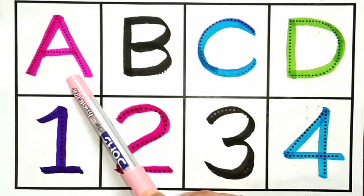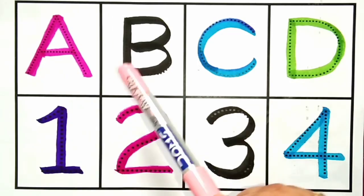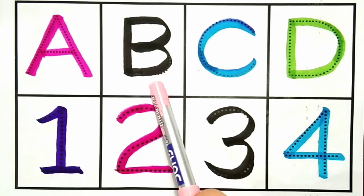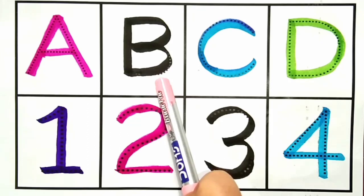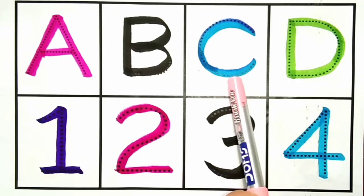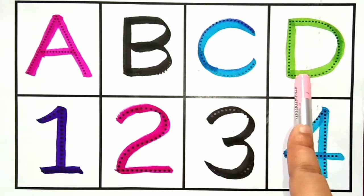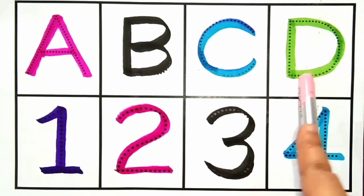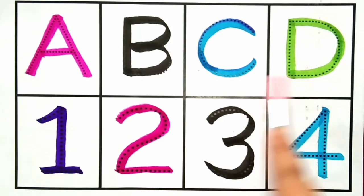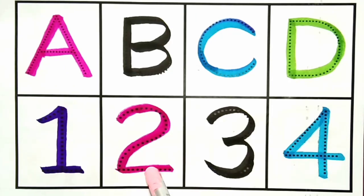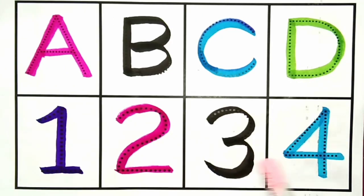A for Ant. B for Butterfly. C for Cat. D for Deer. This is number 1. This is number 2. This is number 3. This is number 4.